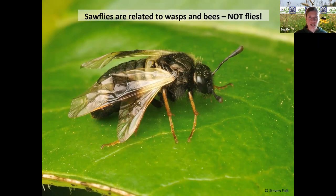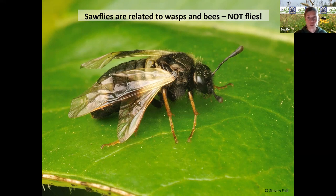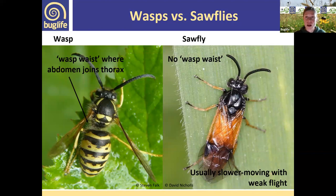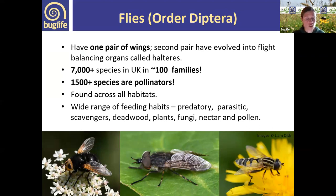Sawflies are related to bees and wasps — they're not flies. There are some very distinctive species but many are difficult to identify to species level. Compared to a wasp, sawflies have quite stout bodies with no waist where the abdomen joins the thorax, and they tend to have a much slower, weaker flight. Their antennae can be variable — wasp-like, clubbed, or even feathered — but the key comparison to a wasp is to look at that waist.